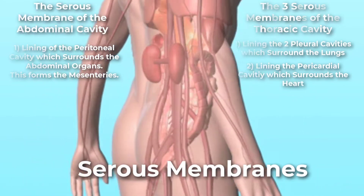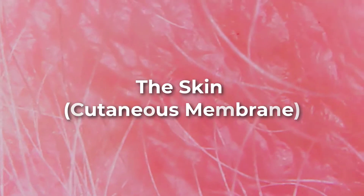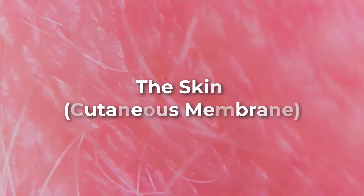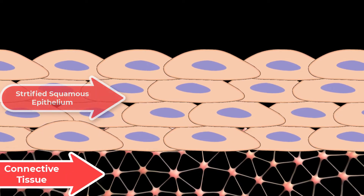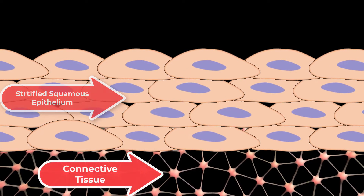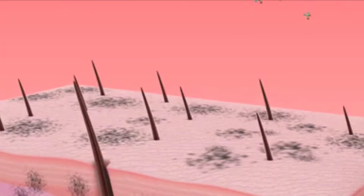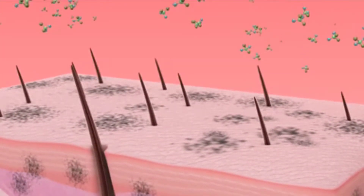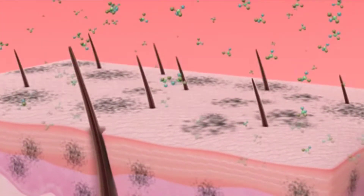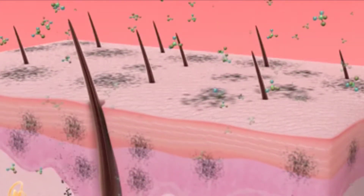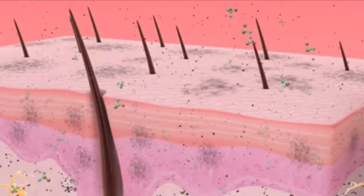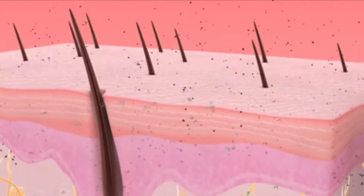The skin is an epithelial membrane, also called the cutaneous membrane. It is a stratified squamous epithelial membrane resting on top of connective tissue. The apical surface of this membrane is exposed to the external environment and is covered with dead, keratinized cells that help protect the body from desiccation and pathogens.